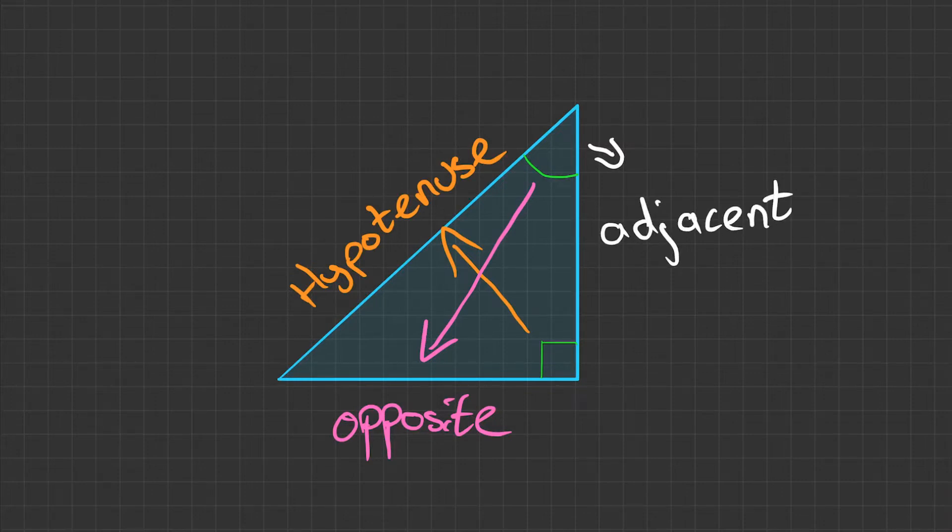Now a way to check that you've put the adjacent in the correct place is that not only is it next to the given angle, but it's also next to the right angle. So the adjacent is between the given angle and the right angle - the two angles we have available.